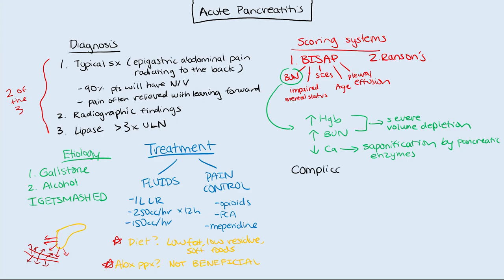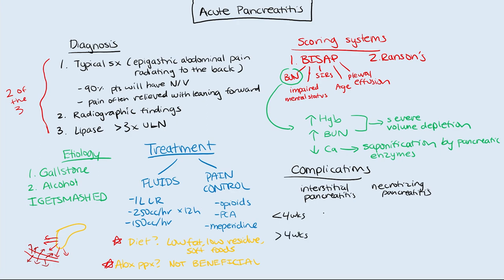Finally, let's discuss complications of acute pancreatitis. The big categories involve fluid collections around the pancreas. You have interstitial pancreatitis — the run-of-the-mill type — and necrotizing pancreatitis, a much more severe form. Complications also differ by timing: less than four weeks or greater than four weeks. With interstitial pancreatitis under four weeks, you get an acute peripancreatic fluid collection. With necrotizing pancreatitis under four weeks, you get an acute necrotic collection. Beyond four weeks: interstitial leads to a pancreatic pseudocyst, and necrotizing leads to walled-off necrosis. The chronic ones have a well-defined wall; the acute ones do not.